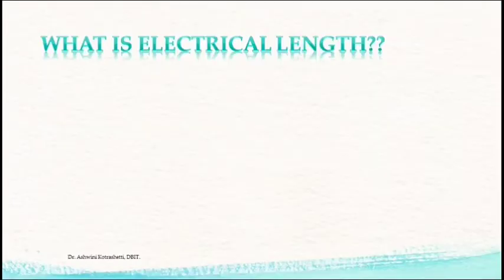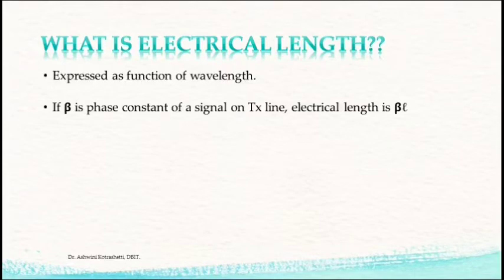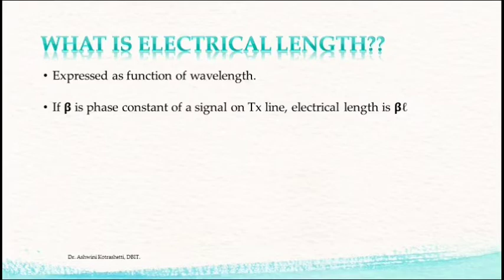So, what is an electrical length? The electrical length is often used while working with transmission lines. It is expressed as a fraction of wavelength, where one wavelength corresponds to 2π radians or 360 degrees. If beta is the phase constant of a signal on a transmission line and L is the physical length, then the electrical length of the line in radians is given by beta·L.